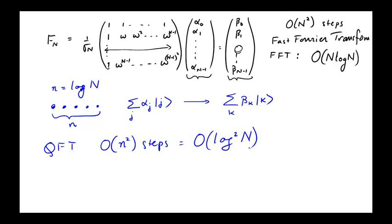It turns out if you work a little harder you can get down to nearly linear in little n steps, which means nearly linear in log N steps. But the main thing is, going from here to here is an exponential improvement. This is where the power of quantum mechanics comes in, the power of quantum computation.